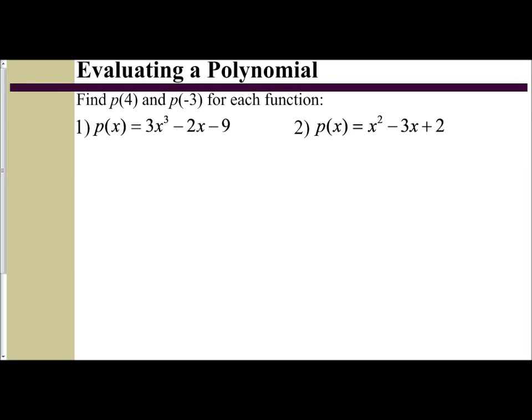In this video, we're going to examine how to evaluate a polynomial for a specific value using function notation. We're told here P(x) = 3x³ - 2x - 9, and we want to find P(4) and P(-3). This is written in function notation.